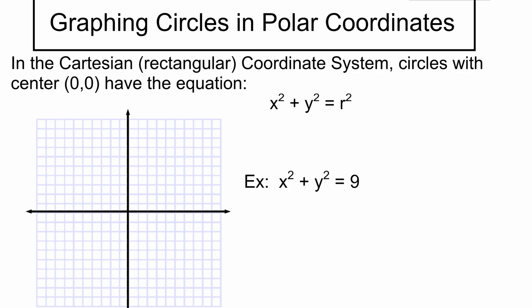We're going to look at graphing circles and lines in this coordinate system. Circles in polar coordinates are different than in the Cartesian system. Circles with center (0,0) have the equation x² + y² = r². This means we have a center at (0,0), and r² = 9 tells us the radius is 3.